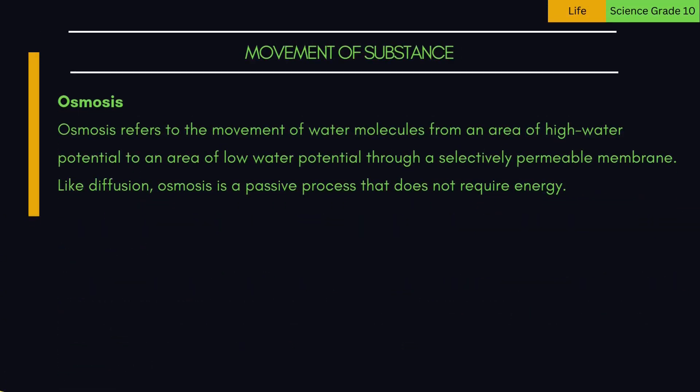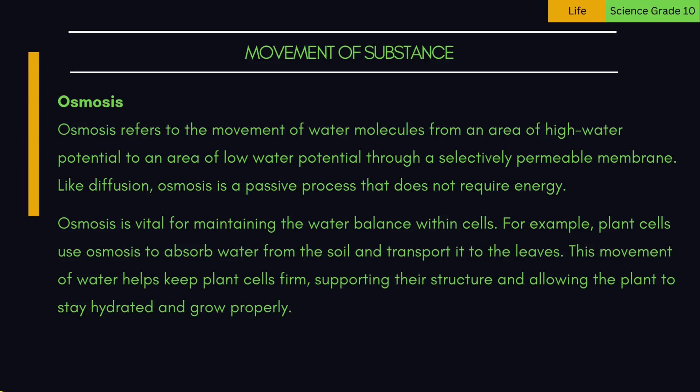2. Osmosis — the movement of water molecules from an area of high water potential to an area of low water potential through a selectively permeable membrane. Like diffusion, osmosis is a passive process that does not require energy. Osmosis is vital for maintaining the water balance within cells. For example, plant cells use osmosis to absorb water from the soil and transport it to the leaves, keeping plant cells firm, supporting their structure, and allowing the plant to stay hydrated and grow properly.